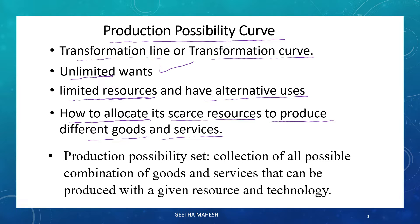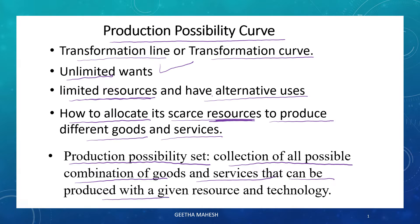Let us assume that resources are given and technology is given. With this, the economy can have any number of combinations of different types of goods and services. That is referred to as the production possibility set — a collection of all possible combinations of goods and services that can be produced with given resources and technology.